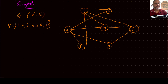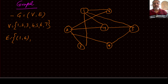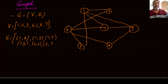This graph has an edge set where each edge requires two nodes. There is an edge between nodes 1 and 6, between nodes 1 and 3, between nodes 1 and 7, and between 1 and 5. Similarly, between 2 and 6, 2 and 7, 2 and 3, and 2 and 4.